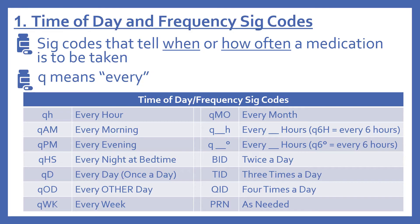BID means twice a day. TID means three times a day. QID means four times a day. And PRN means as needed.